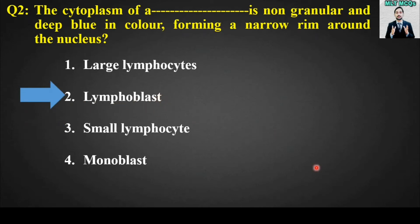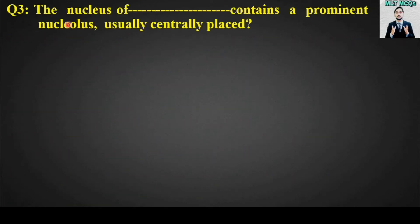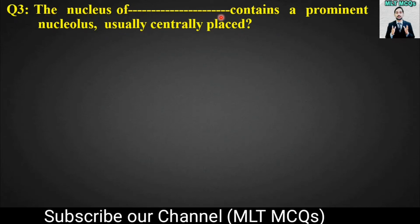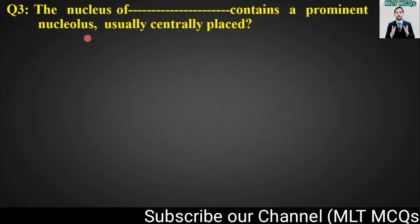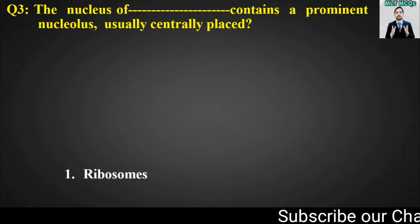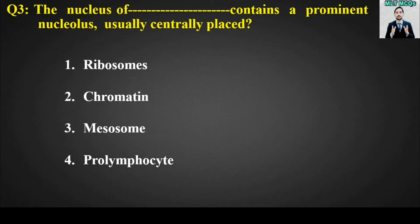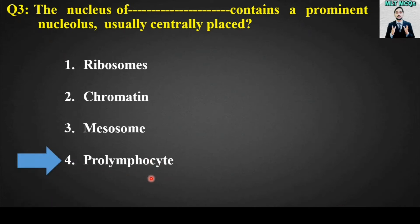MCQ number three: the nucleus of blank contains a prominent nucleolus, usually centrally placed. Options are ribosomes, chromatin, mesosome, or prolymphocyte. The right option for this MCQ is option number four, prolymphocyte. So the nucleus of prolymphocyte contains a prominent nucleolus usually centrally placed.